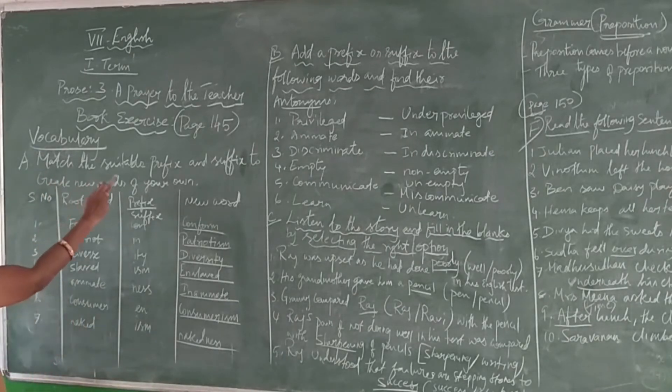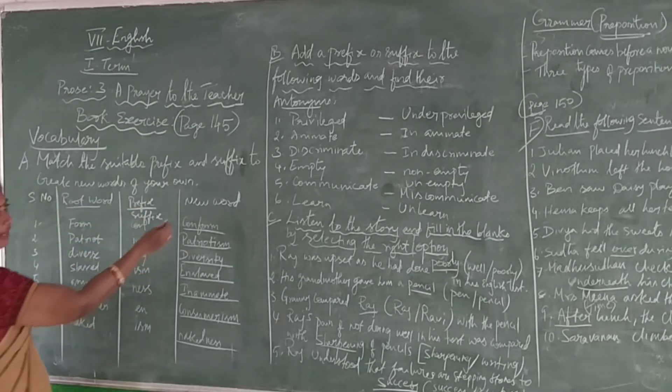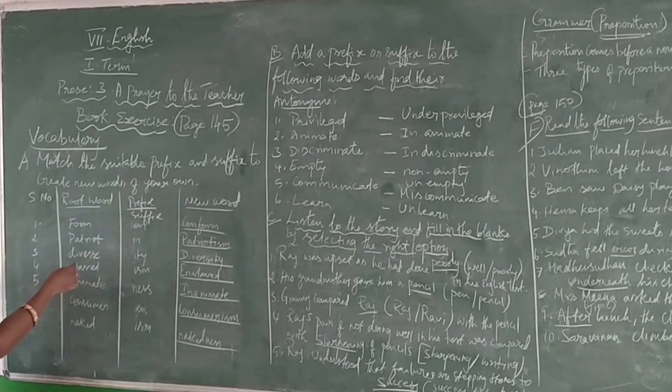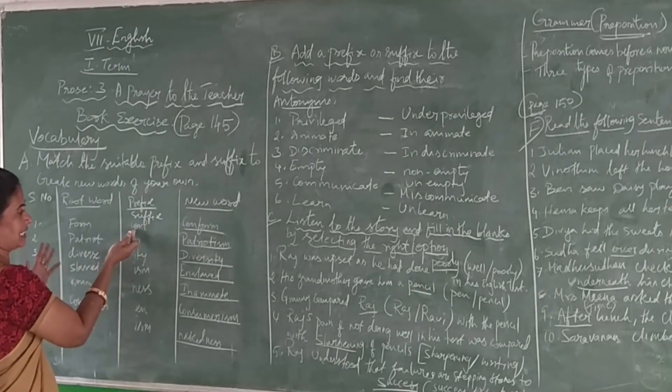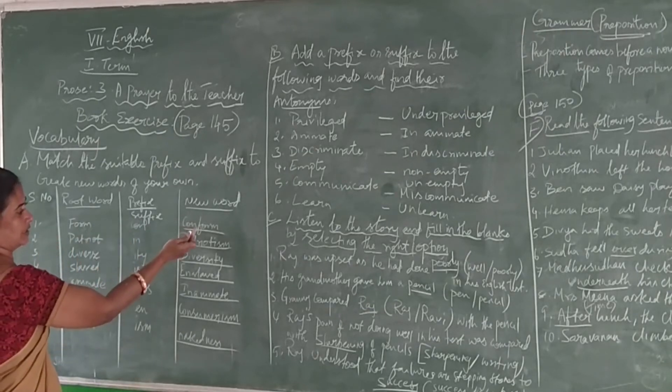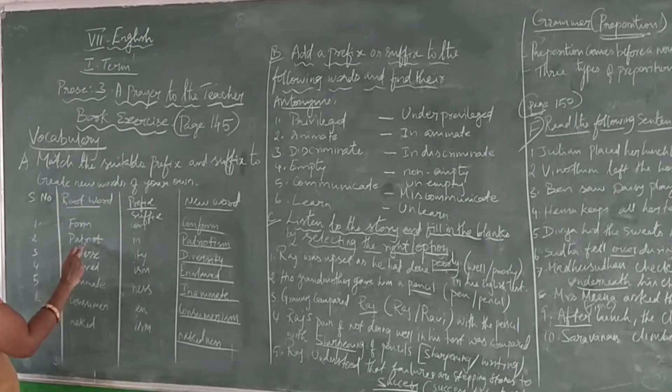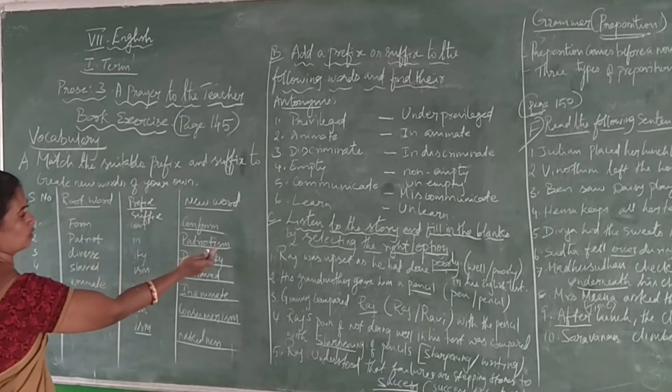Match the simple prefix and suffix to create new words of your own. They will be giving you the root word and the prefix and suffix word. You have to look at the new word for it. First word is 'form'. For this C-O-N they have given, you have to form 'conform'. Then based on this, 'patriot' - you have to add prefix or suffix and write 'patriotic'.